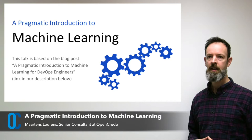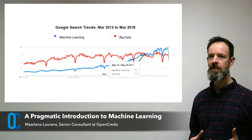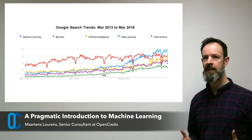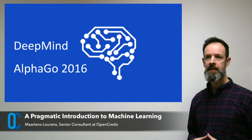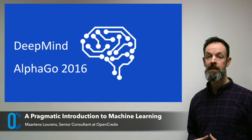Machine learning is a hot topic these days. You only need to look at search trends like this one, showing how searches for machine learning eclipsed searches for big data back in May 2017, and this one, showing the growth of terms like artificial intelligence, deep learning, and data science on the same graph. DeepMind's success with AlphaGo early in 2016 really brought machine learning to the attention of the wider community and the world at large.